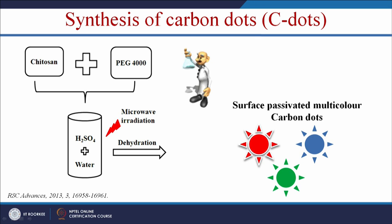Let me explain the synthesis of carbon dots by a simple method. We can use chitosan as a carbon source and polyethylene glycol 4000 as a passivating agent. These are mixed in water plus sulfuric acid, then microwave radiation is applied using a domestic microwave oven. Due to the dehydration process, you get surface-passivated multicolor carbon dots.